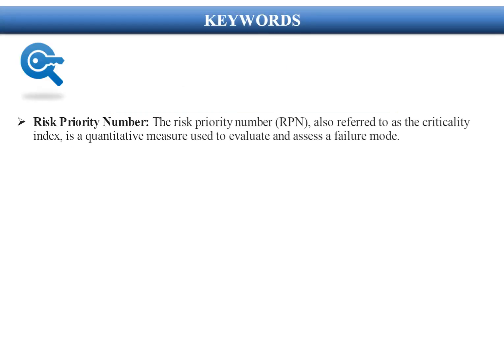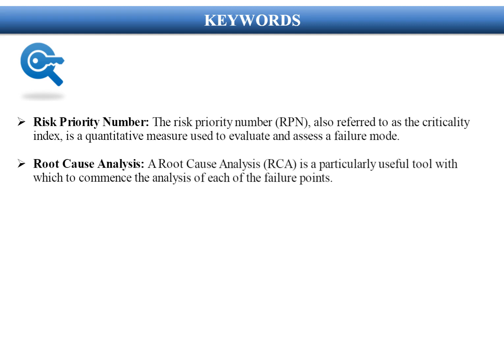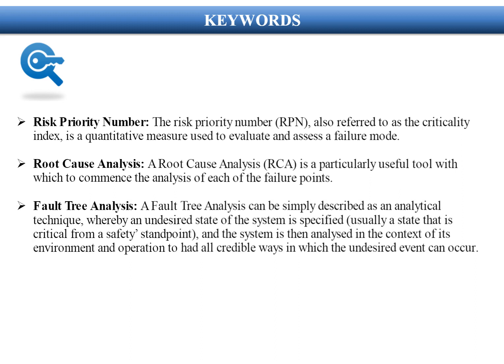Keywords. Risk Priority Number (RPN), also referred to as the Criticality Index, is a quantitative measure used to evaluate and assess a failure mode. Root Cause Analysis (RCA) is a particularly useful tool with which to commence the analysis of each of the failure points. Fault Tree Analysis (FTA) is an analytical technique whereby an undesired state of the system is specified — usually a state that is critical from a safety standpoint — and the system is analyzed in context of its environment and operation to find all credible ways in which the undesired event can occur.